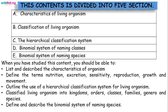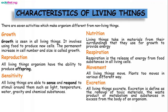Here are the characteristics of living things. There are seven activities which make organisms different from non-living things. The first activity is nutrition, also known as feeding — living things take in material from the surroundings used for growth and to provide energy. The second is respiration, which is the release of energy from food substances in living cells.